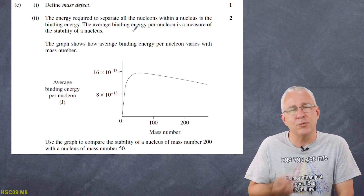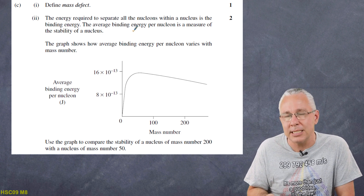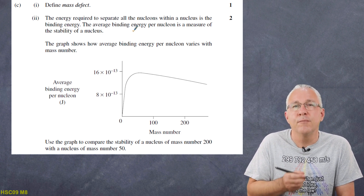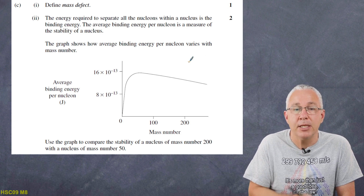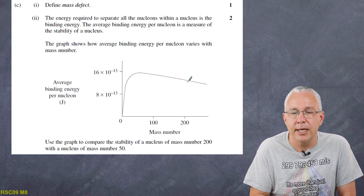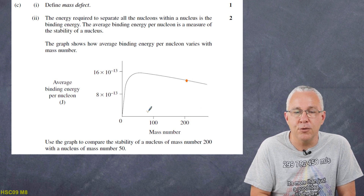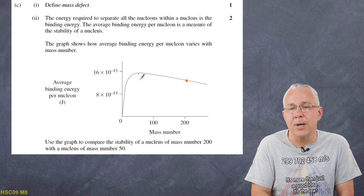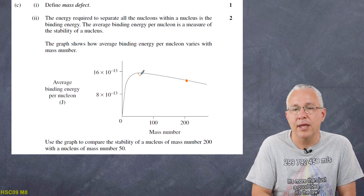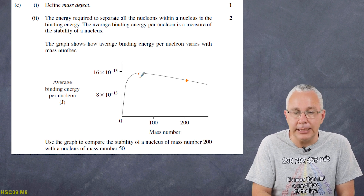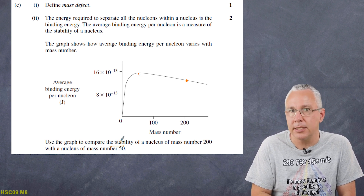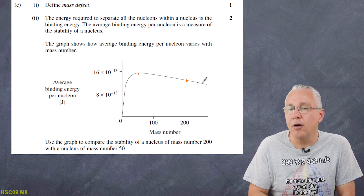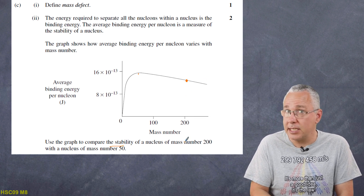So to answer the question: mass defect is the difference between the mass of the constituent parts and the total atom. For the comparison, reading off the graph, the nucleus at mass number 50 has a greater binding energy per nucleon than the nucleus at mass number 200. Therefore the stability of the lower mass number nucleus is reasonably higher than that of the larger mass number nucleus — and that's essentially what you need to state.